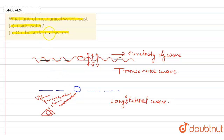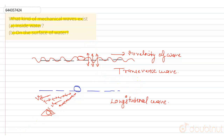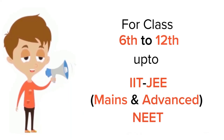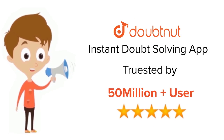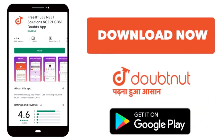So, inside water, longitudinal waves exist, and on the surface of water, transverse waves exist. For class 6 to 12, IIT JEE and NEET level — trusted by more than 5 crore students — download the DoubtNet app today.